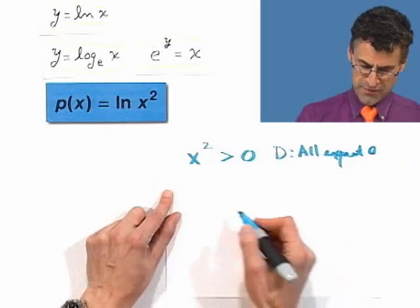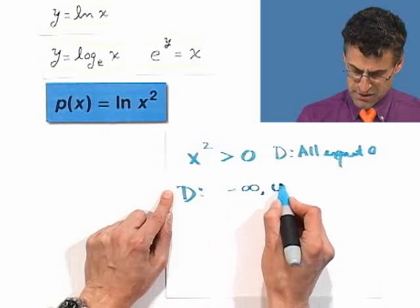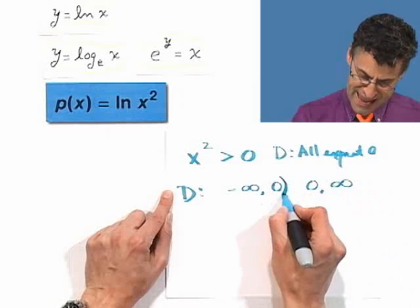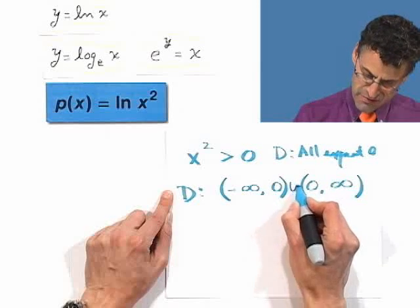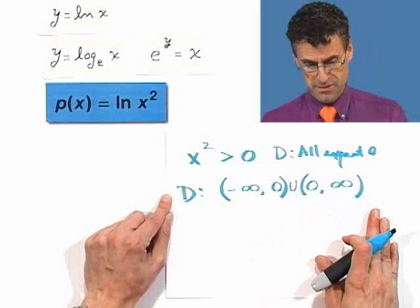And you could write that in a fancy way, if you want, by saying you can take all the numbers from negative infinity up to 0, and all the numbers beyond 0 to positive infinity, but you do not include 0, but you can take the union of everything else. So that's everything to the left of 0, together with everything to the right of 0.